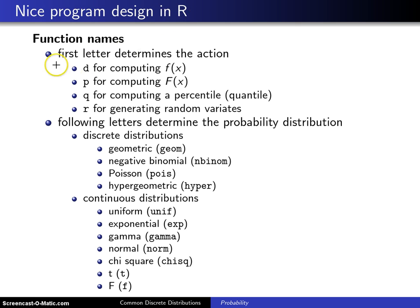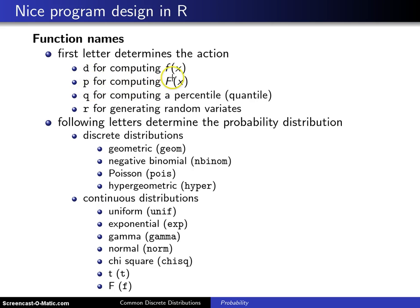The convention here is that the first letter determines the action. Namely, if you have a D, you're computing f of x, which for a discrete distribution is the probability mass function. If the first letter is a P, you're computing the cumulative distribution function.